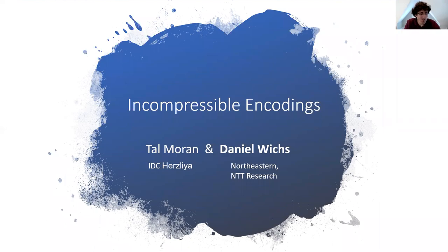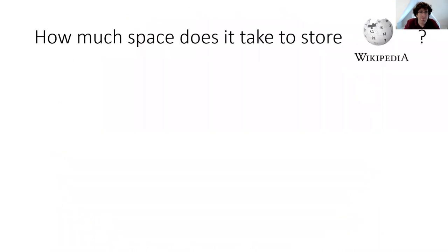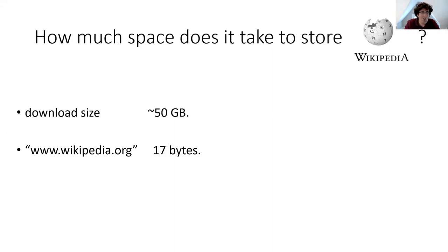Hi, I'm Daniel Wicks and I'm going to tell you about incompressible encodings. This is joint work with Tal Moran. Let me start with a question: how much space does it take to store Wikipedia? It turns out that you can actually download the entire Wikipedia contents for offline use, and depending on which version you get, it can be something like 50 gigabytes — I think this is for the text-only English version. But there's an alternate way of storing the Wikipedia data, which is just to store the link www.wikipedia.org. That only takes about 17 bytes.